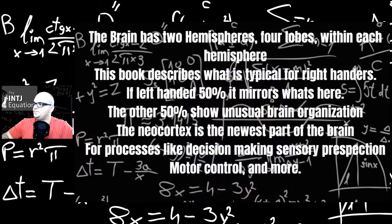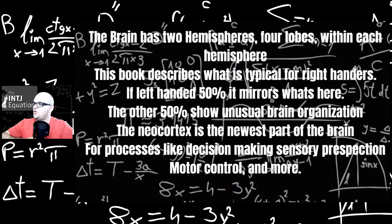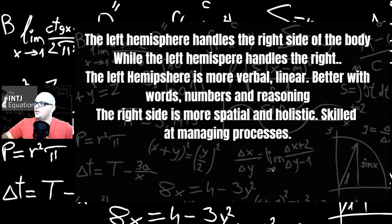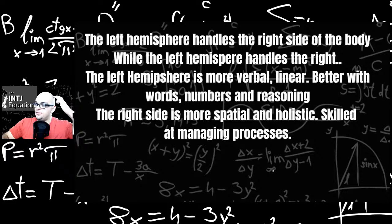Chapter three, overview of the neocortex. The brain has two hemispheres, four lobes within each hemisphere. The book describes what is typical for right-handers. If left-handed, 50% mirrors what's here. So pretty much what a right-hander's neocortex shows, it's going to be mirror opposite with a left-hander, or at least 50% of them. The other 50% show unusual brain organization. The neocortex is the newest part of the brain that developed in human evolution for processes like decision-making, sensory perception, motor control, and more. The left hemisphere handles the right side of the body while the right hemisphere handles the left.